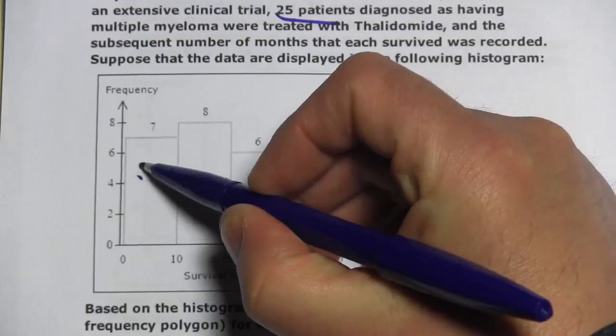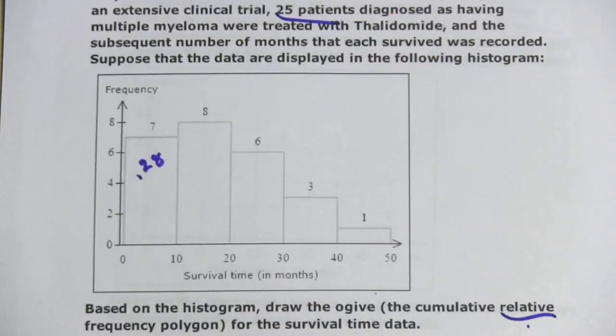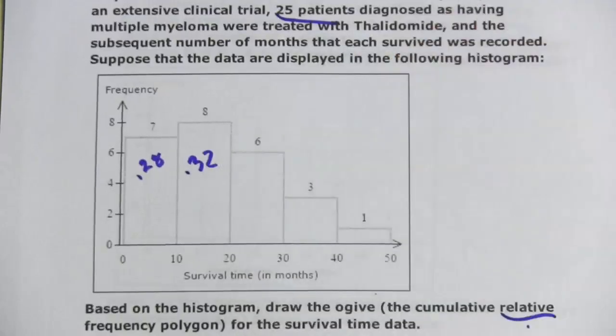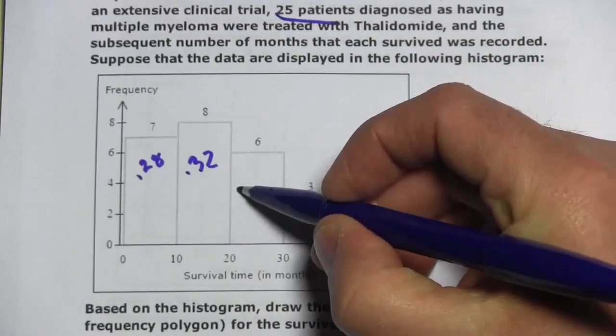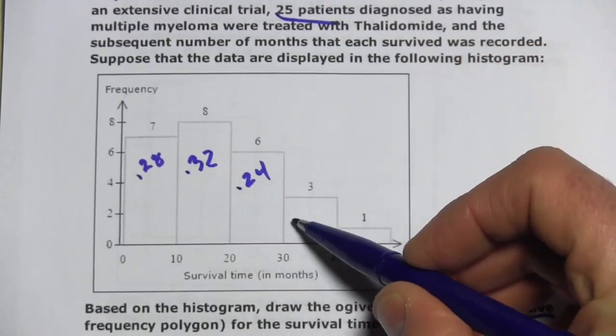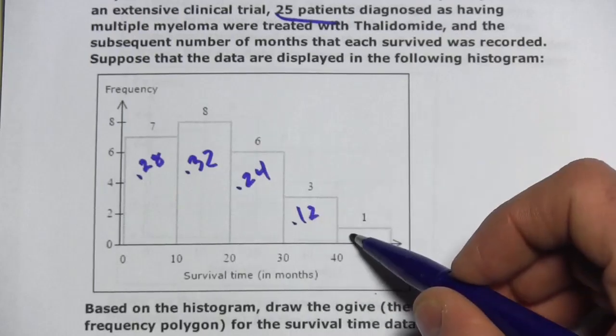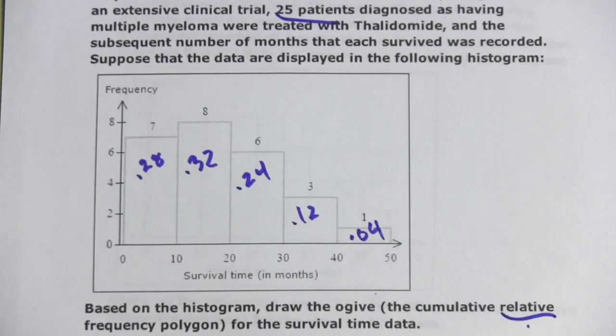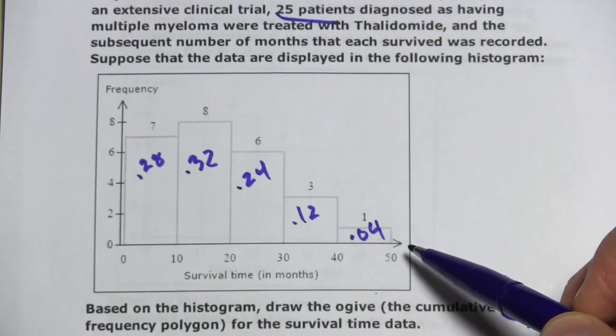And 8 divided by 25, 0.32. 6 divided by 25 is 0.24. 3 would be 0.12, and 1 is 0.04. So those are our relative frequencies.